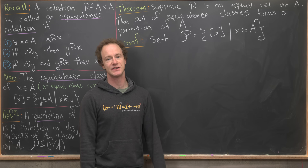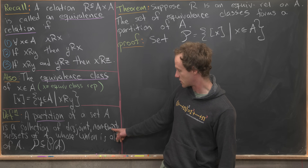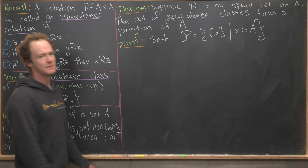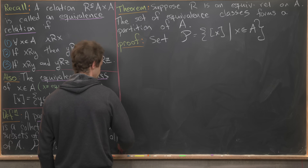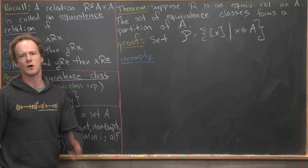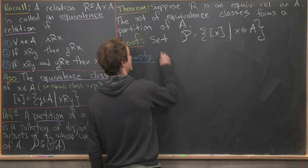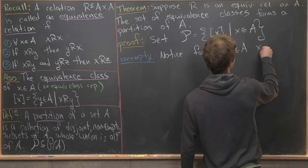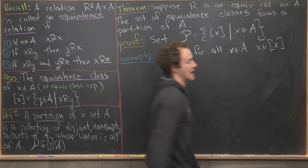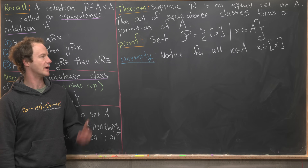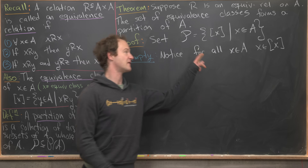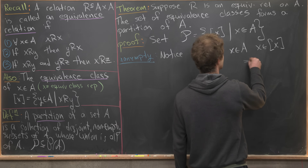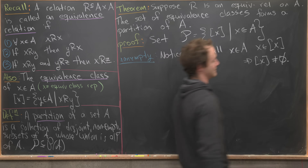Let's show they're all non-empty first. For all X in A, X is in its own equivalence class because X is related to itself by reflexivity. The fact that every equivalence class contains at least itself as an element tells us that no equivalence class can be the empty set.